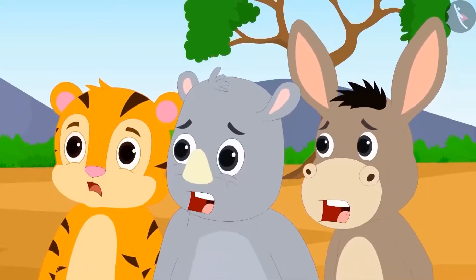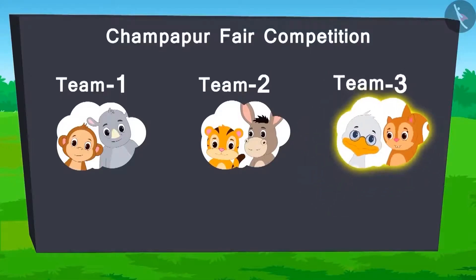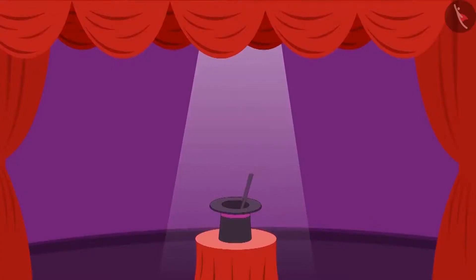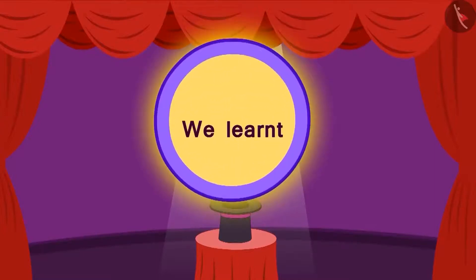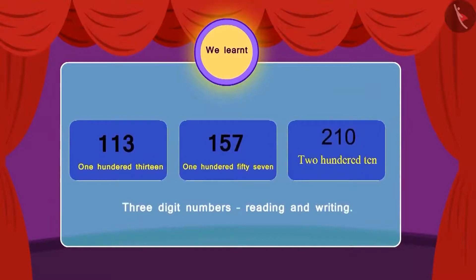Everyone wondered how Chanda did it. In this way, team 3 has won the ticket of this game. But there are more games still remaining. We will see what happens in the following video. In this lesson, we learnt how to read and write three digit numbers.